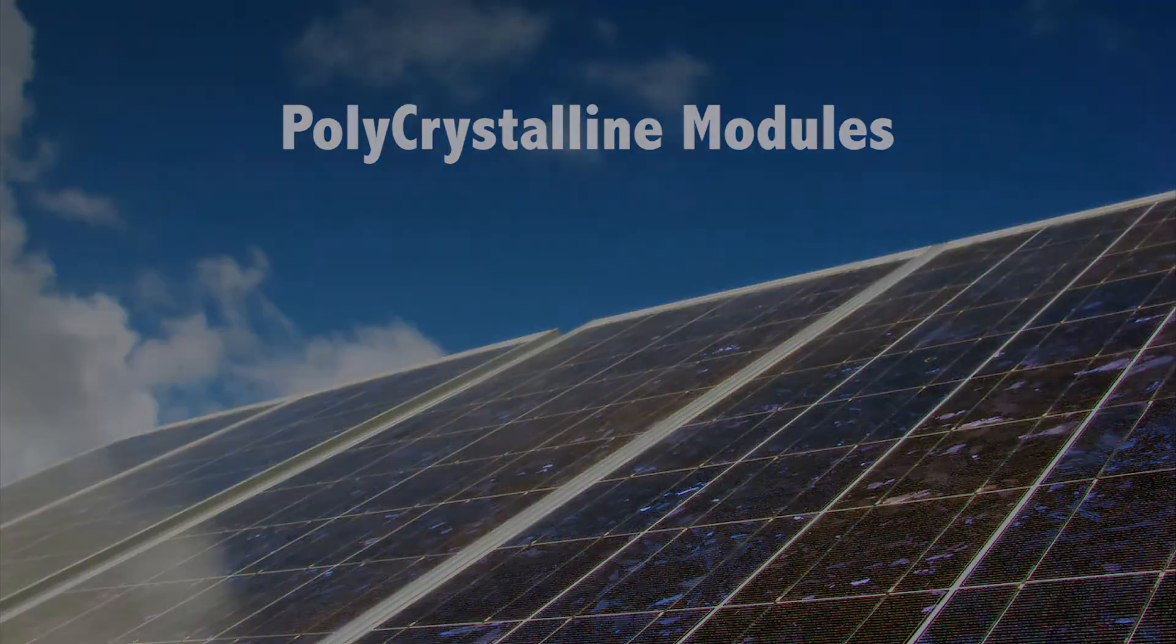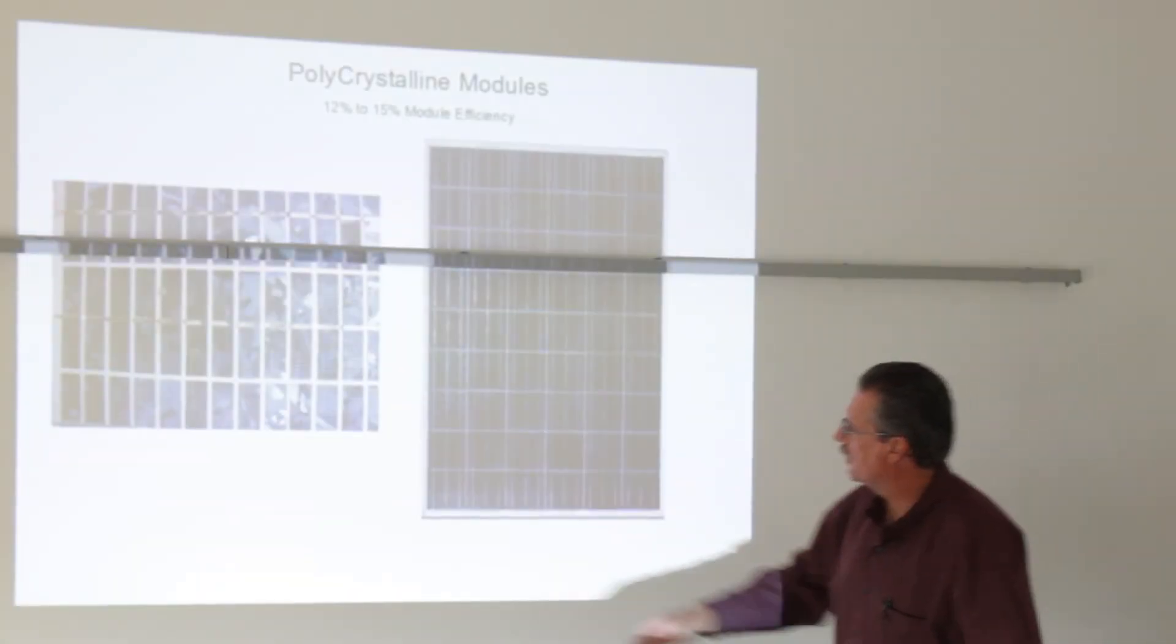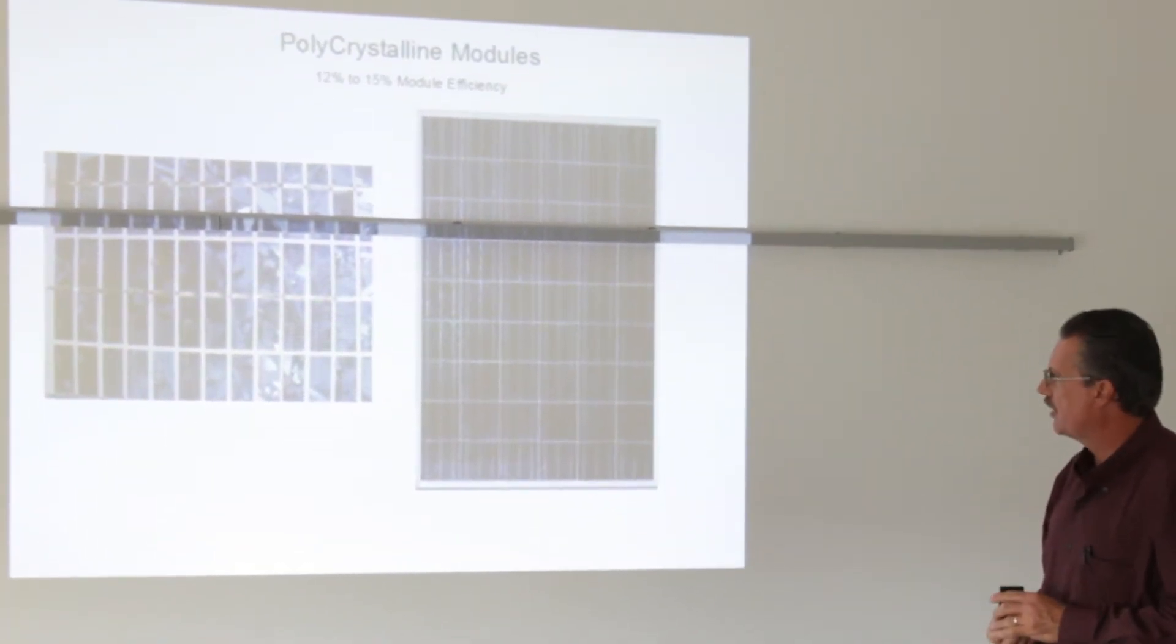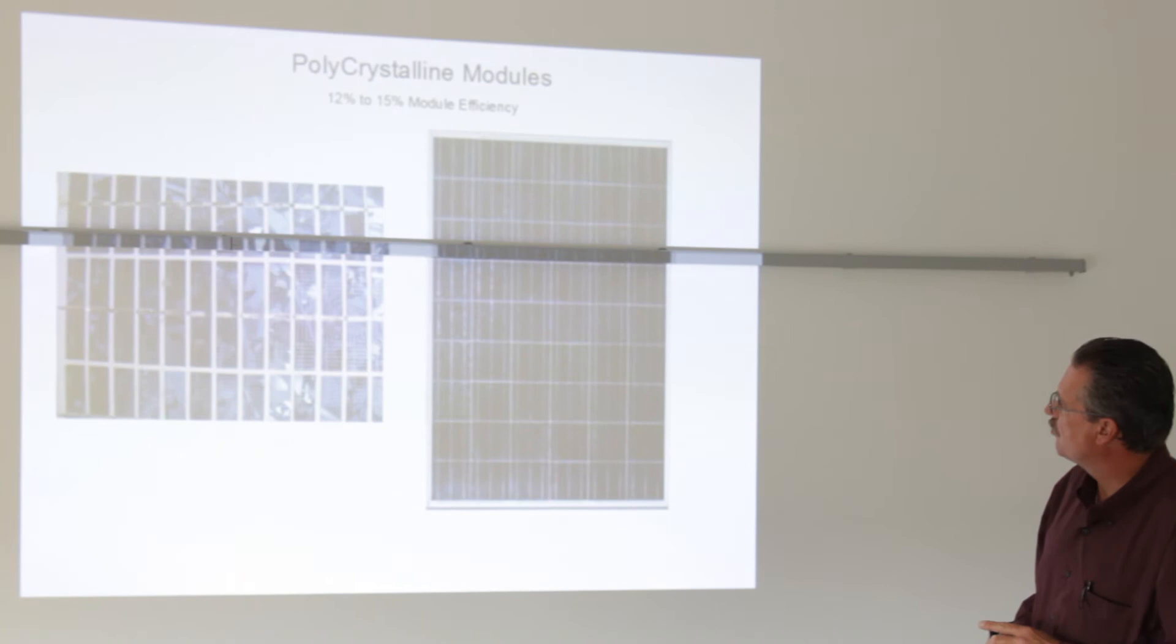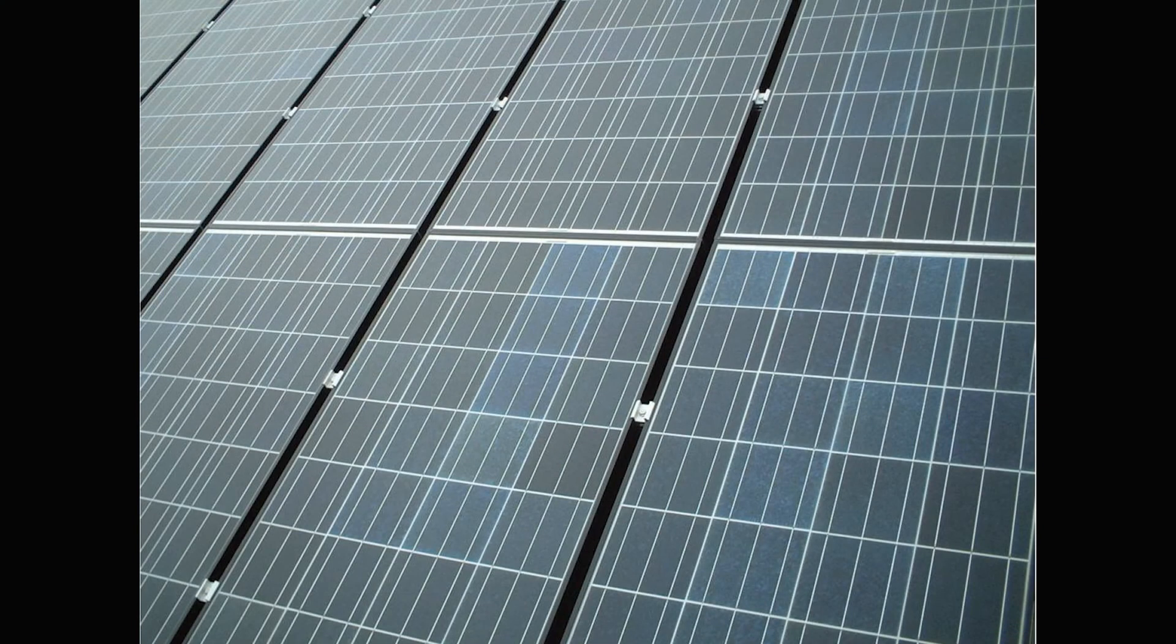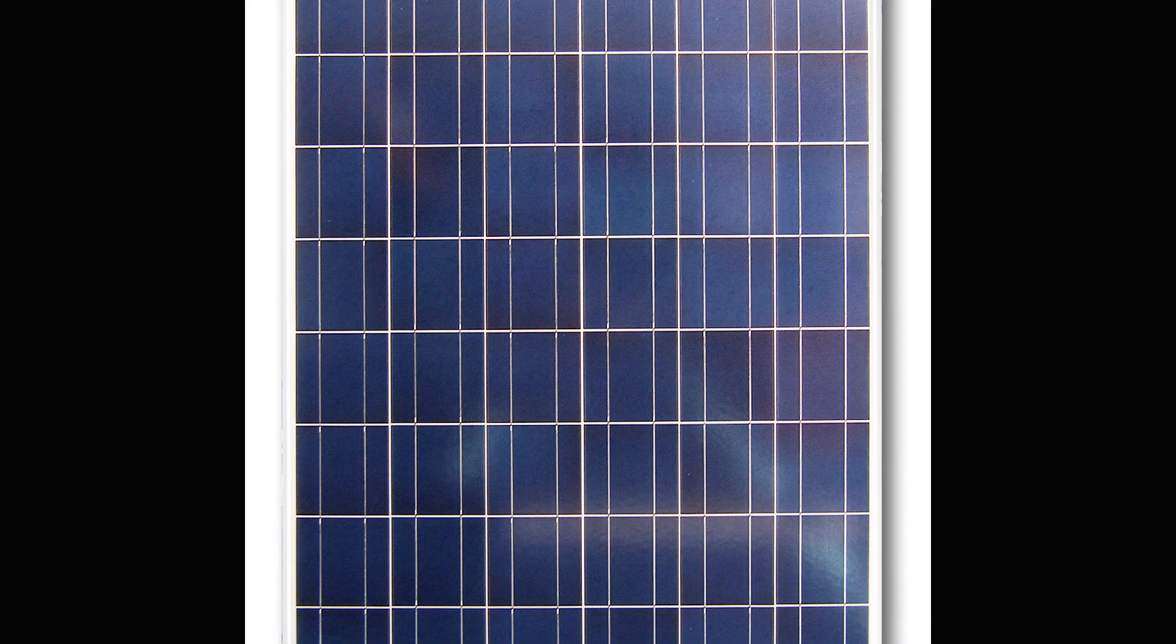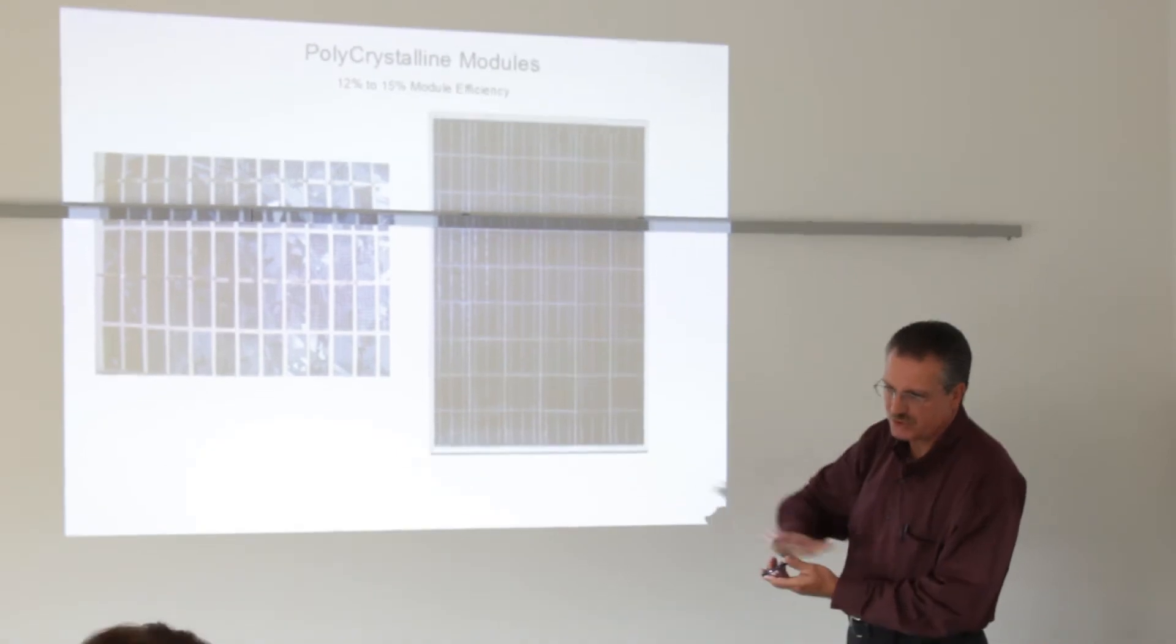Polycrystalline, where they actually have chips that are integrated, as you can see from the reflection here, little chips. They work quite well. Their efficiency is not as good as monocrystalline. You'll see a 12 to 15 percent module efficiency. And notice now here, we don't have the individual cells. We don't have the spacing between. It's just a sheet.